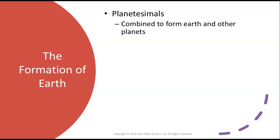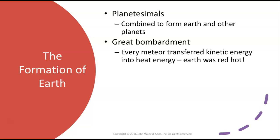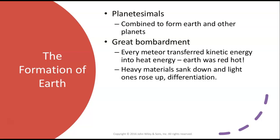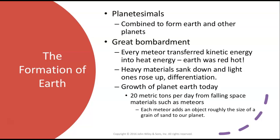So how did the Earth form? Planetesimals combined to form Earth and other planets. Then you get the Great Bombardment, where Earth gets bombarded by meteor after meteor coming in at unimaginable speeds. That kinetic energy — the energy of movement — gets transferred into heat energy when these large explosions happen on the surface. Earth was quite literally a ball of lava, basically a ball of liquid hot red magma. Heavy materials like metals would sink down and light ones would rise up, resulting in differentiation. 20 metric tons a day of material, such as meteors, still falls from space — each meteor adding roughly the size of a grain of sand to our planet.